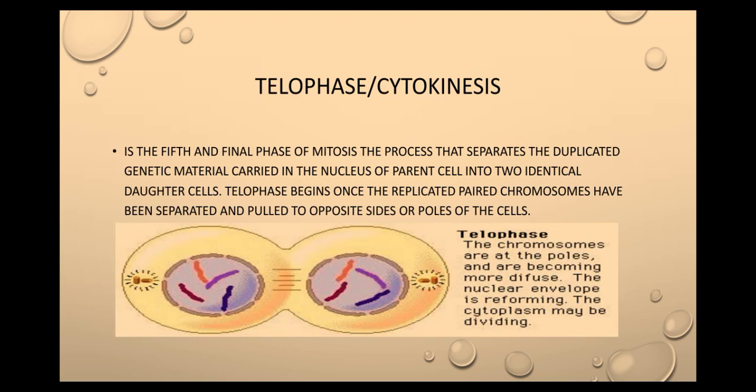Last, the fifth and final phase is telophase, or cytokinesis. Telophase begins once the replicated paired chromosomes have been separated and pulled to opposite sides, or poles, of the cell.